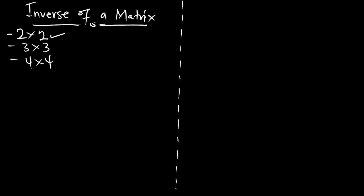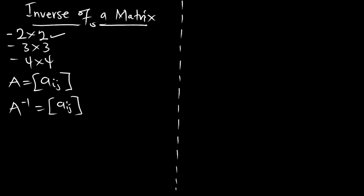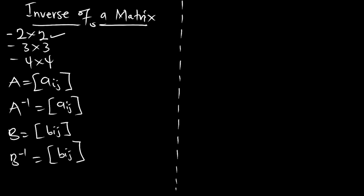What do we have to know? If I'm given a matrix A, represented by A-sub-IJ, to find the inverse of matrix A, that will be A inverse equal to a certain matrix. This is how to write the inverse of a matrix. Say I have matrix B — B inverse is a certain matrix. This is the representation of the inverse of a particular matrix.